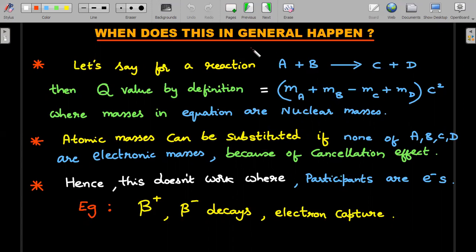When does this generally happen? When can you take this as thumb rule when solving in exams? Let's say for a reaction A plus B gives rise to C plus D in a nuclear situation. The Q value by definition is mass of reactants minus mass of products into c². We know this, where masses in the equation are actually nuclear masses. If this is a nuclear reaction, the participant masses in this equation should be nuclear masses. Then atomic masses can be substituted here instead of nuclear masses by adding and subtracting electrons, and those additions and subtractions of electrons get cancelled actually if A, B, C, D themselves don't have electrons as participants. That means if A and B are nuclei and C and D are nuclei and none of these are actually electrons or beta particles, then only this cancellation effect is okay.